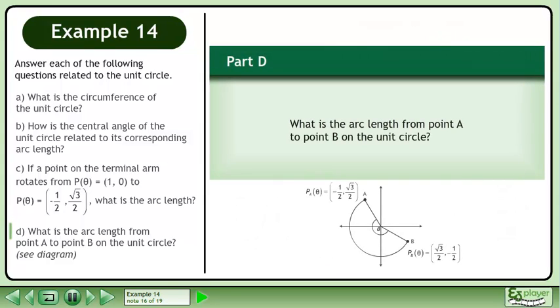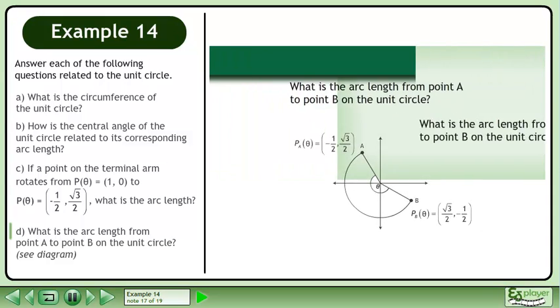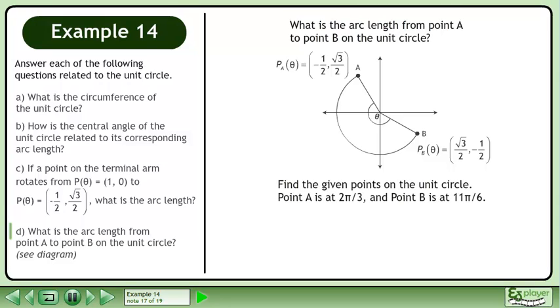Now we'll move on to part D. What is the arc length from point A to point B on the unit circle? Find the given points on the unit circle. Point A is at 2π over 3 and point B is at 11π over 6.